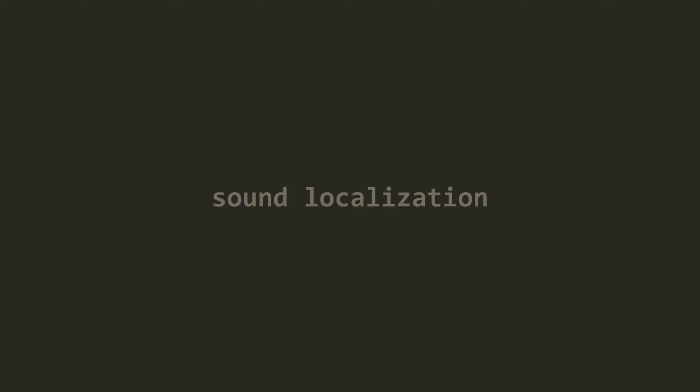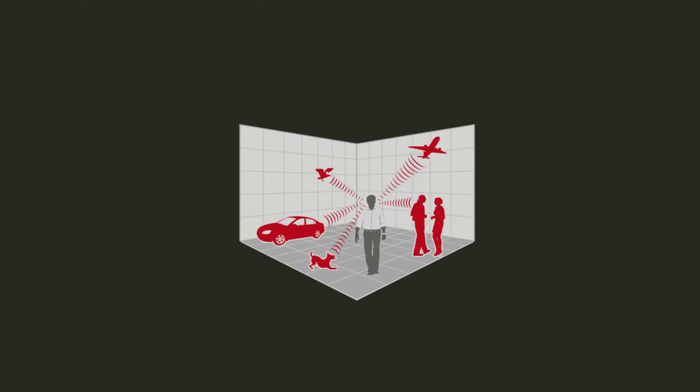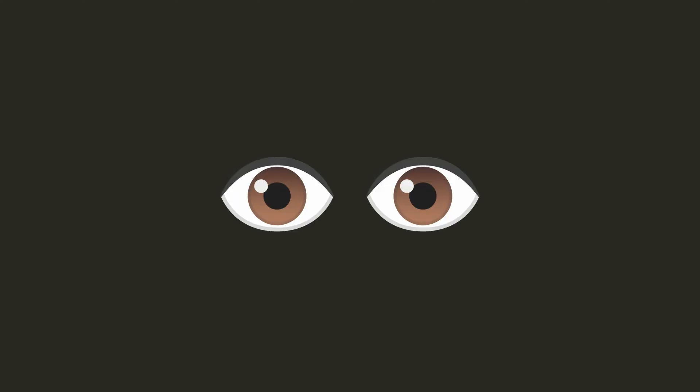Before we can define binaural audio, we need to understand the idea of sound localization. Sound localization is a person's ability to identify the direction a sound is coming from and how far away it is. Humans have the ability to localize sound in any direction — left, right, up, down, in front, and behind. Just like how our eyes can tell us where an object is and how far away it is, our ears can do the same thing with sounds.